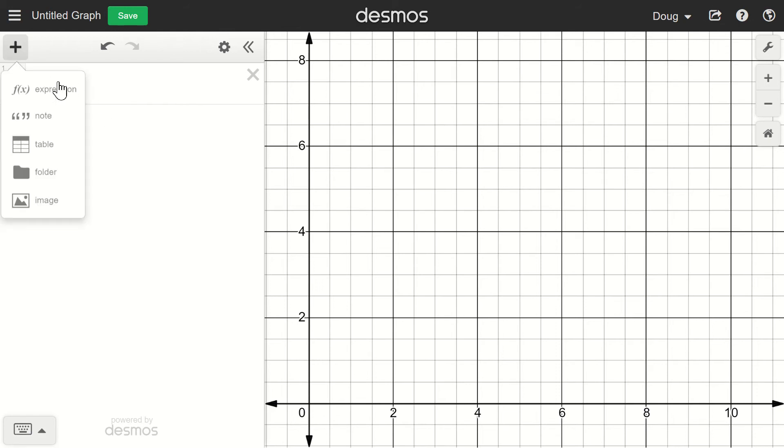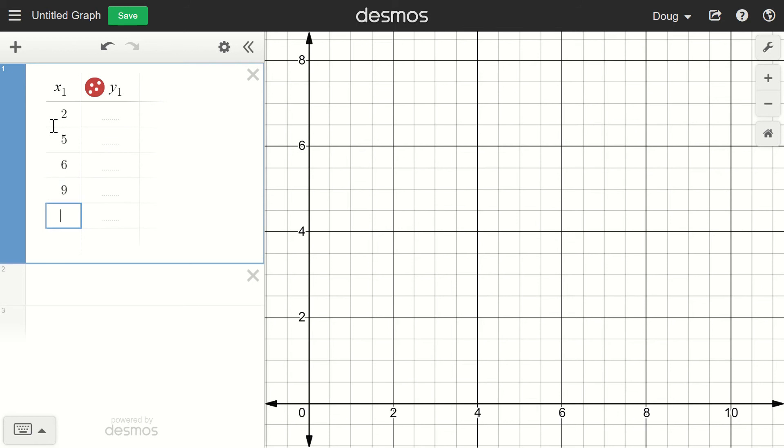So I'm going to enter a quick data set here. Here's a table and I'll just enter the values two, five—whoops let's get this right, you have to have num lock on—two, five, six, nine, and twelve. And then just some corresponding y values, and I'm completely making this up. I'm going to go one, two, four, five, and seven.